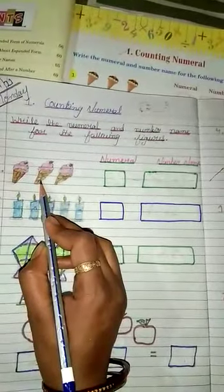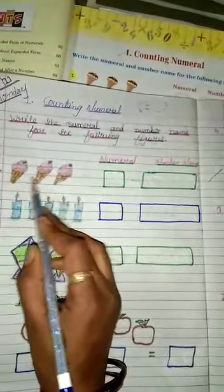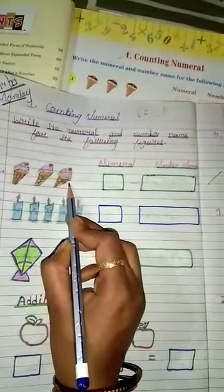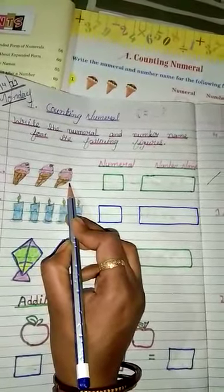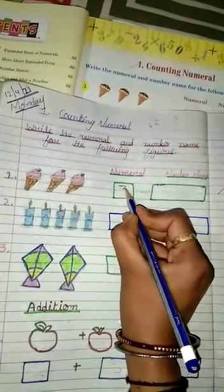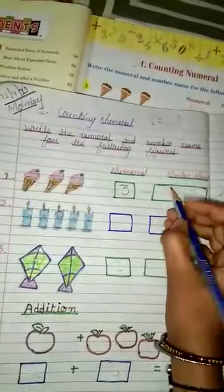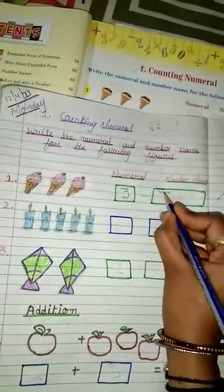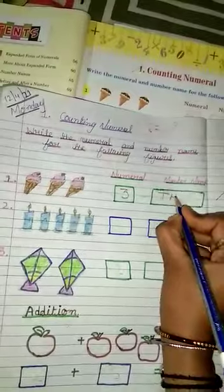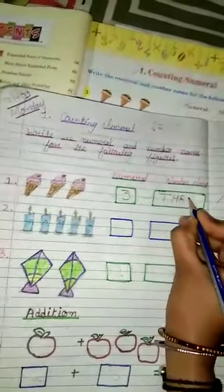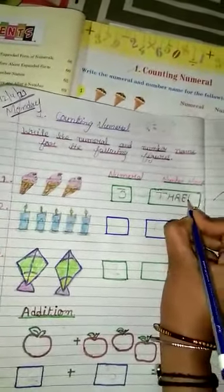How many ice creams are there? Count it. 1, 2, 3. How many? 3. So in numeral, we should write 3. And in number name, write the spelling of 3. T-H-R-E-E. Three.